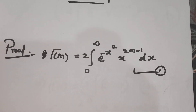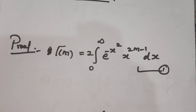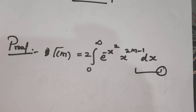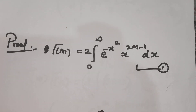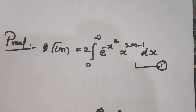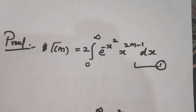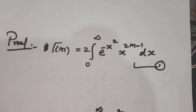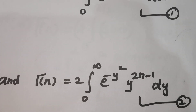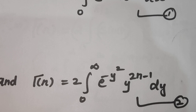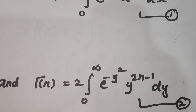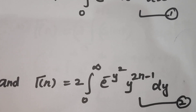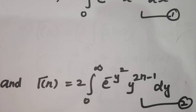By definition of gamma functions, we write gamma of m is equal to 2 times integral from 0 to infinity of e power minus x square, x power 2m minus 1, dx. Put it as equation number one. Also, gamma of n is equal to 2 times integral from 0 to infinity of e power minus y square, y power 2n minus 1, dy. That is equation number two.